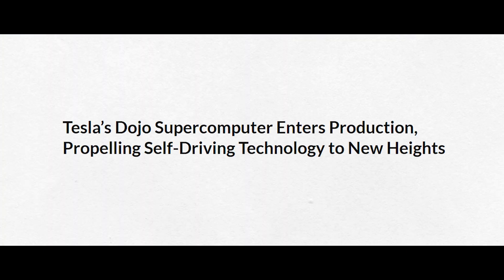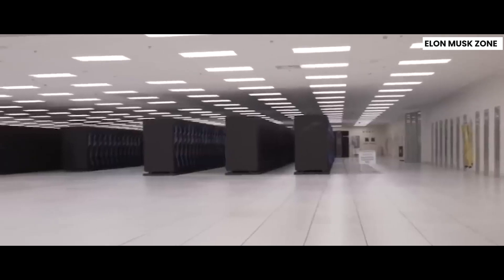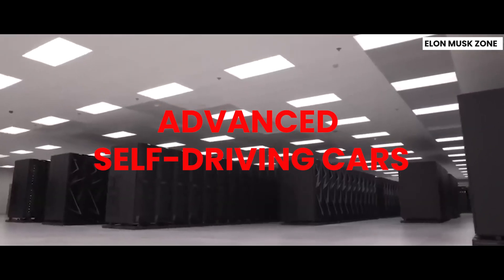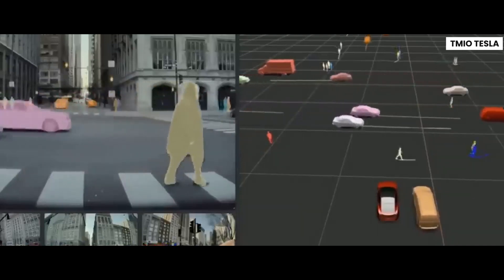And now, Tesla is taking a big step forward by putting Dojo into production. This is really exciting news because it means Tesla is getting closer to achieving their vision of safer and more advanced self-driving cars. Dojo is their secret sauce for training AI systems and making cars smarter on the road.